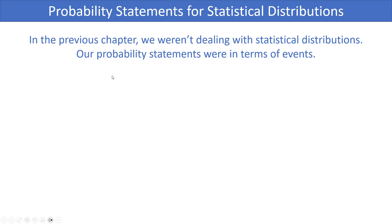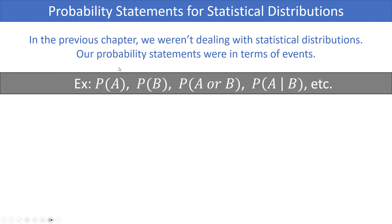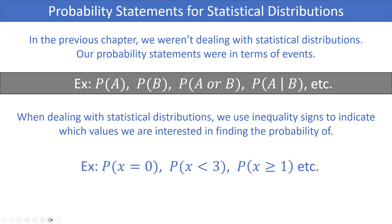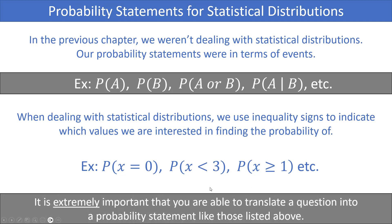In the previous chapter we weren't dealing with statistical distributions — when we found probabilities we would write probability statements in terms of events such as P(A), P(B), P(A or B), P(A given B), etc. But now, since we're dealing with a statistical distribution, we're going to use inequality signs to indicate which values we're interested in. Typically the letter X represents our variable, so we might write P(X = 0), P(X < 3), or P(X ≥ 1).